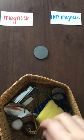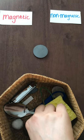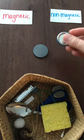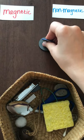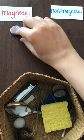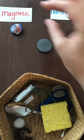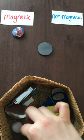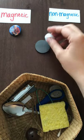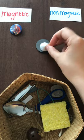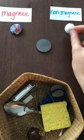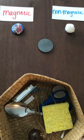Magnetic means that it sticks to the magnet. So this is magnetic. The pin is magnetic. Non-magnetic means that it doesn't stick or it's not attracted to the item. So the cotton ball is non-magnetic.